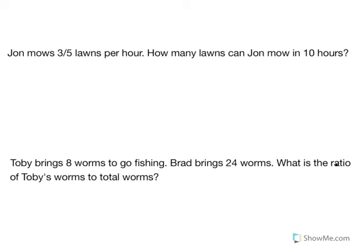In this video we're going to learn about comparing ratios and we're going to take a look at two different problems. The first one says that John mows three-fifths lawns per hour. How many lawns can John mow in ten hours? So we know two things: first of all that John is able to mow on average three-fifths of a lawn per hour, and we want to know how many lawns he can mow in ten hours.